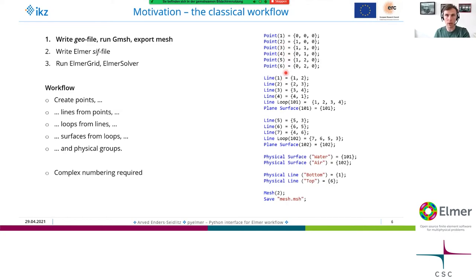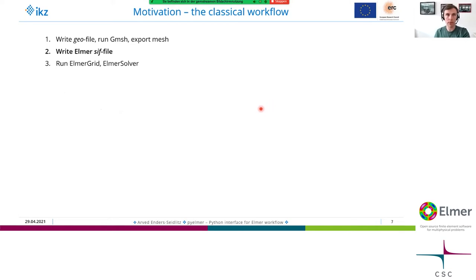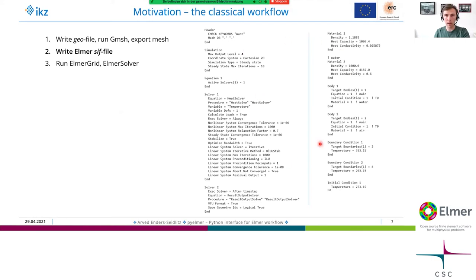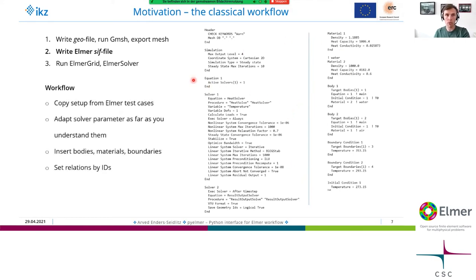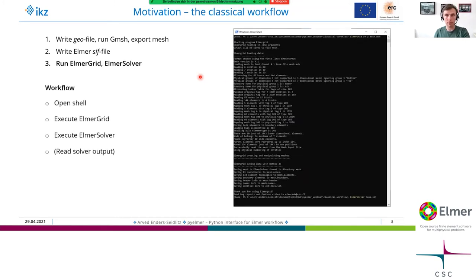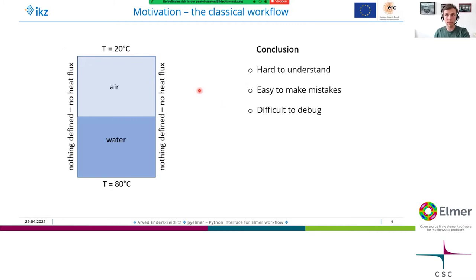The first step is the Gmesh geoscript, where you define points, lines, loops, surfaces, and physical surfaces to export the mesh. This is already quite complex for this simple case — especially the numbering, which makes things difficult. Then when you write your simulation input file, I would copy everything I needed, adapt it as far as I understood it, and manually set the relations using IDs. I found it hard to understand as a beginner and easy to make mistakes that were difficult to debug.